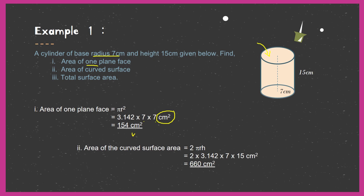Multiplying these gives the area in cm², and you get 154 cm². So the area of one circle is 154 cm². Now for the area of the curved surface — that rectangular part — we use 2πrh: 2 multiplied by 3.142, multiplied by r equals 7, multiplied by h equals 15 cm. Multiplying these gives 660 cm².